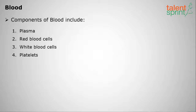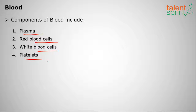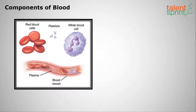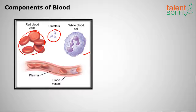What are the components of blood in the human body? The first is plasma, next is red blood cells, then white blood cells, and finally platelets. These are the four components of blood. You can see red blood cells, platelets, white blood cells, and plasma, which is the liquid part of the blood.